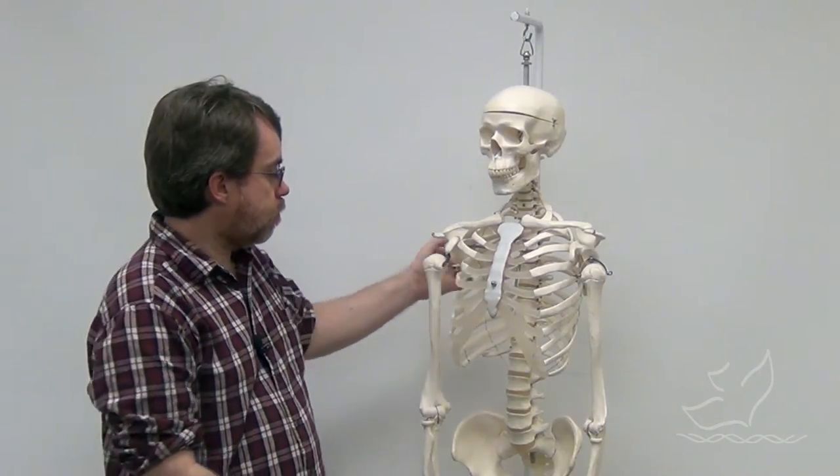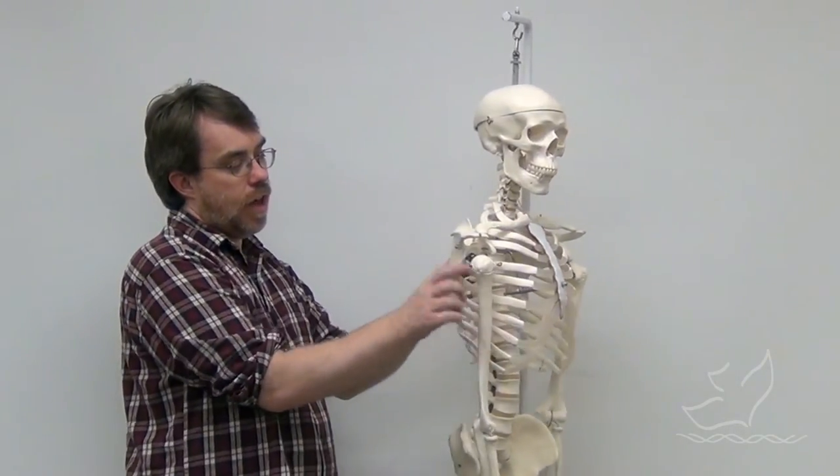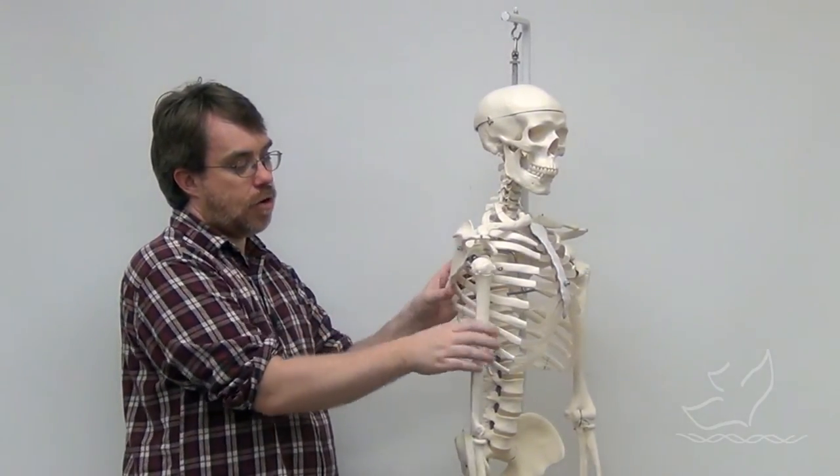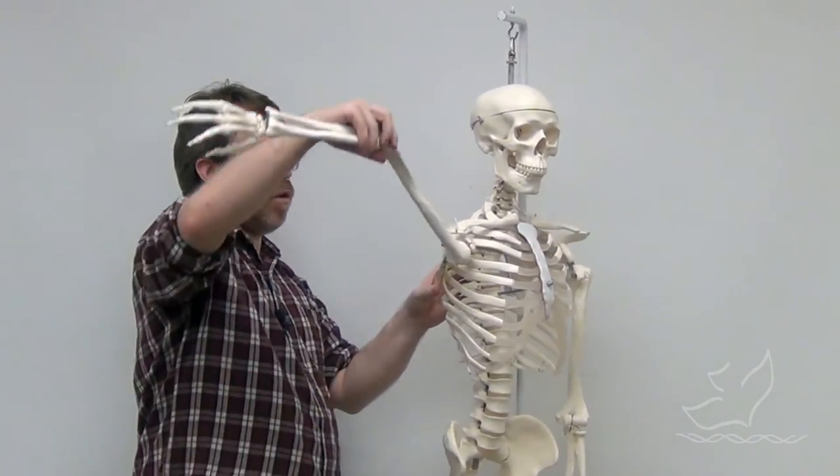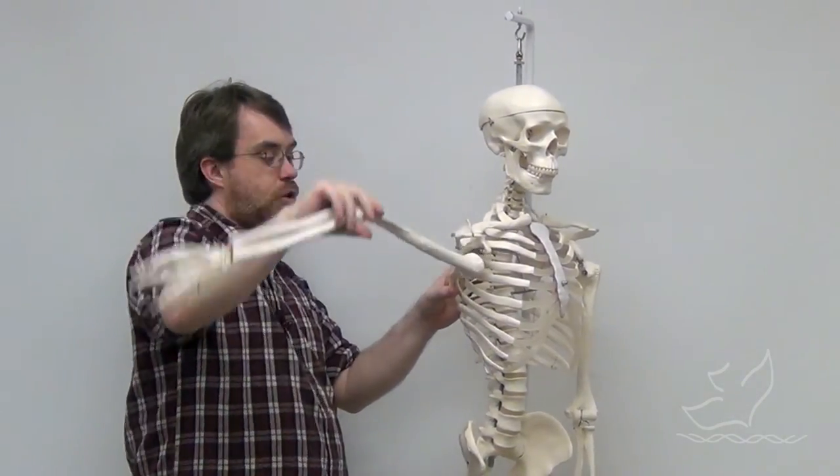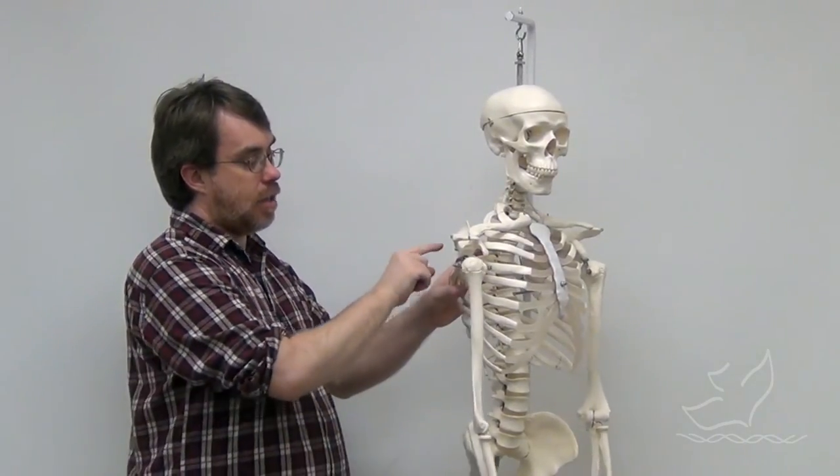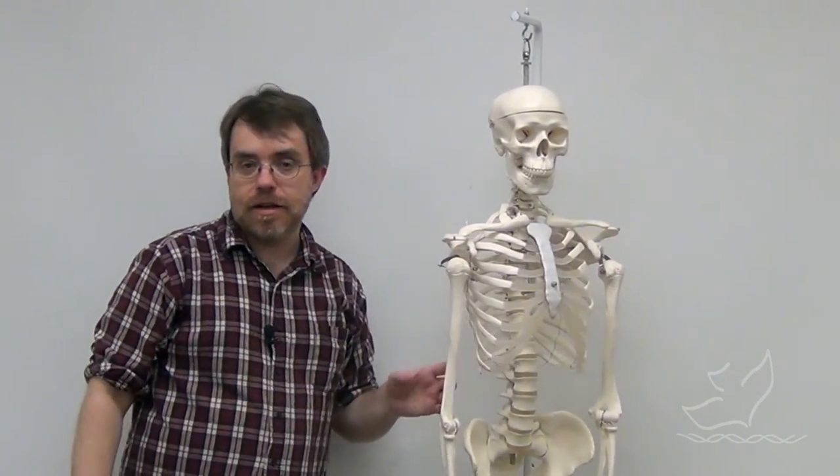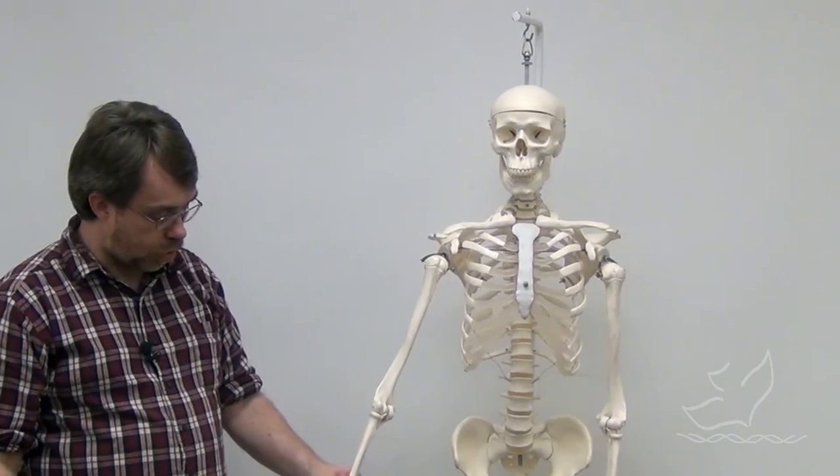The shoulder blade here, you can see on our model, that process that sticks out is going to make for difficult time if you're going to hang your arms up. But if you have the process angled at a different angle, then it's going to be much easier for you to hold your arms up.